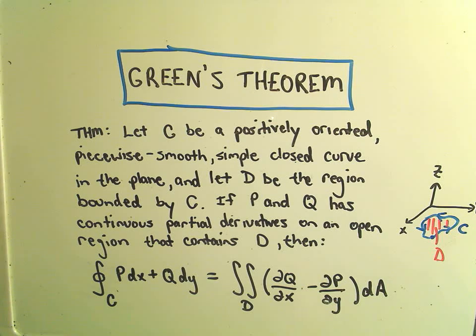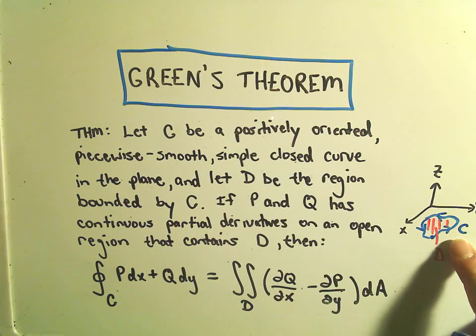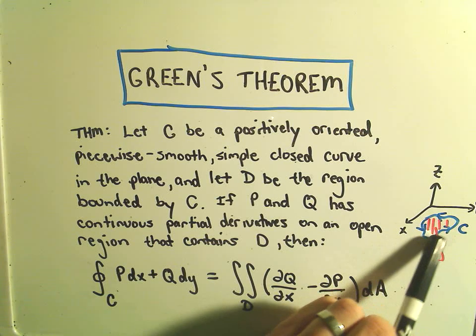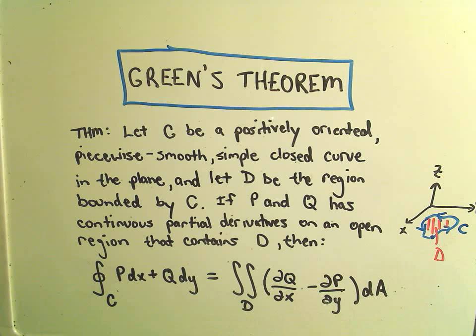we have a positively oriented, piecewise smooth, simple closed curve in the plane, and d is going to be the region enclosed by that curve, so we've got some little simple closed curve. Positively oriented just means that you're traveling around the curve counterclockwise in the plane, and it says if our functions p and q have continuous partial derivatives on an open region that contains d,